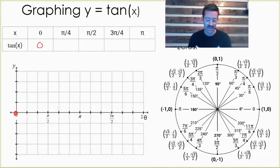That means we start with the point zero, zero. Next, we move to π over 4. At π over 4, y over x is this value divided by itself. Anything divided by itself is one. So at π over 4, our y coordinate is one.